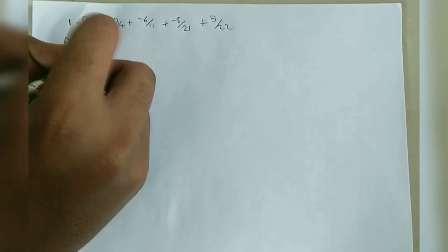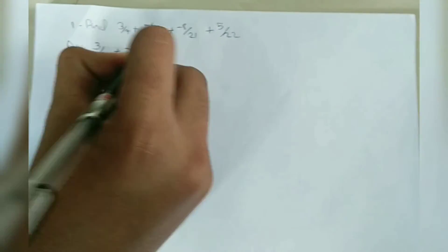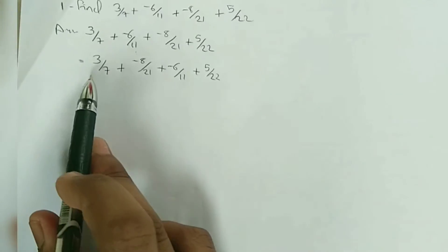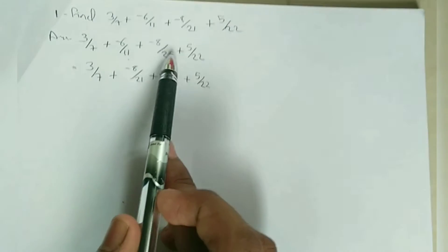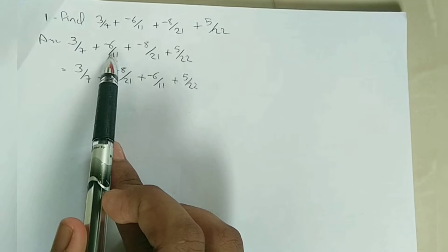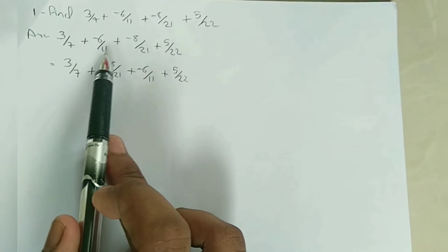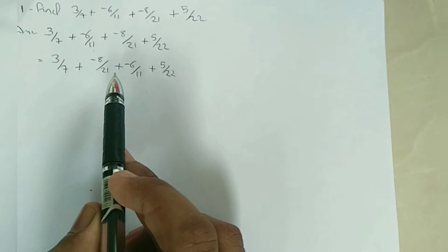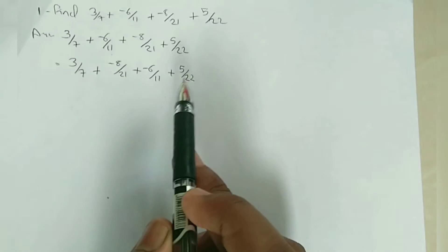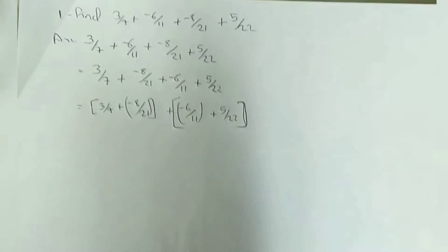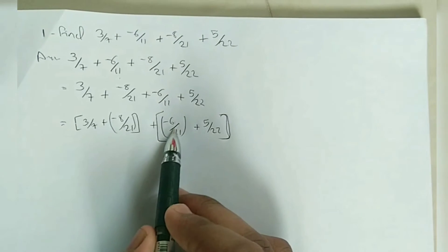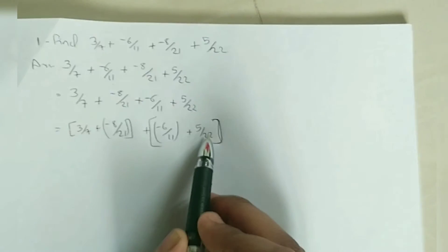Solution: 3/7 + (−6/11) + (−8/21) + 5/22. We rearrange and group: 3/7 + (−8/21) + (−6/11) + 5/22.